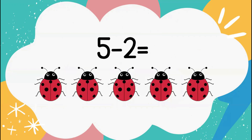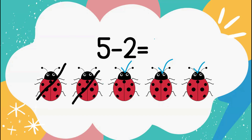For our next problem, we have 5 minus 2 equals. Can you say this problem with Miss K? 5 minus 2 equals. Let's take a look at our ladybugs — we have a group of 5 ladybugs, but we need to subtract 2. Let's cross off: 1, 2. Now count how many are left: 1, 2, 3. Good job — there are 3 ladybugs. We had a group of 5, took away 2, and now we're left with 3.